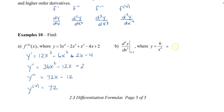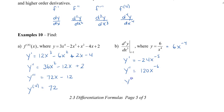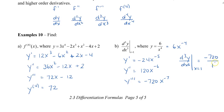For the last example, find the third derivative and evaluate at x equals 1. I recommend rewriting 6 over x to the 4th as 6x to the negative 4. Then y prime equals negative 24x to the negative 5. The second derivative: negative 24 times negative 5 is 120x to the negative 6. The third derivative: 120 times negative 6 is negative 720x to the negative 7. Evaluating the third derivative at x equals 1: negative 720 times 1 to the 7th (with positive exponent) equals negative 720.